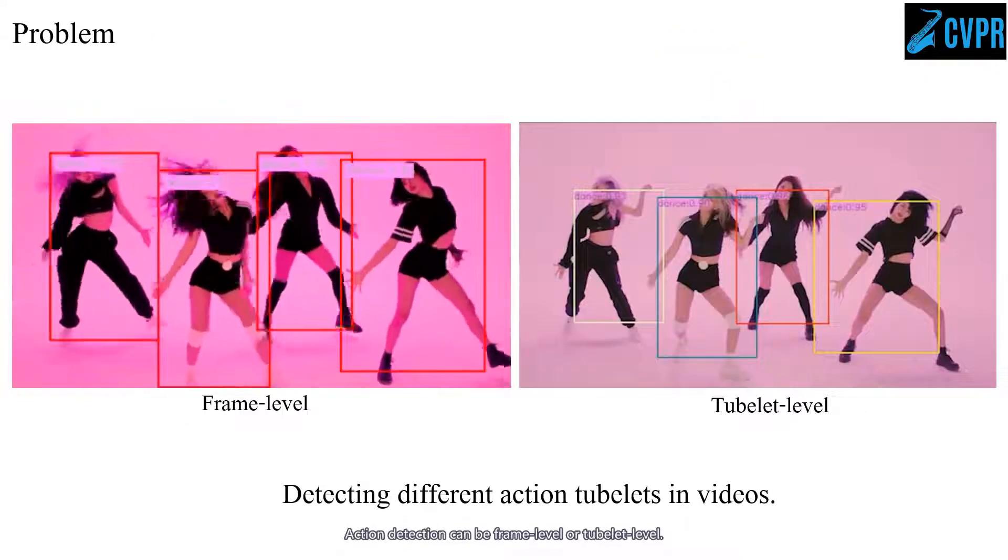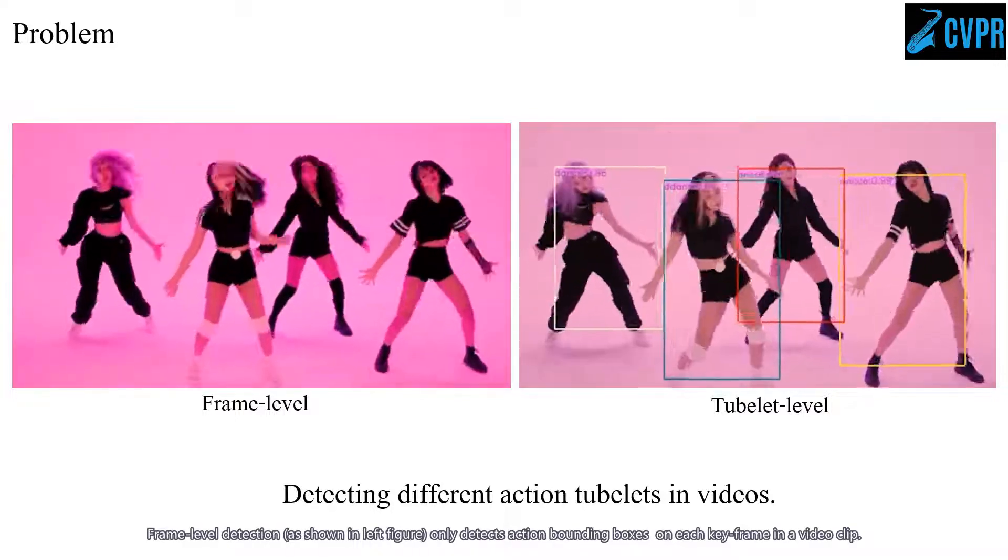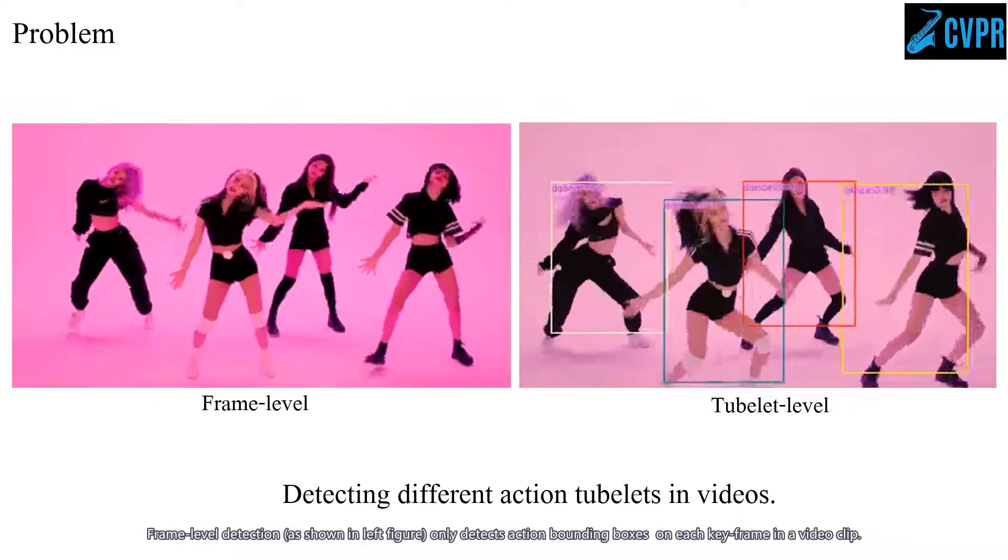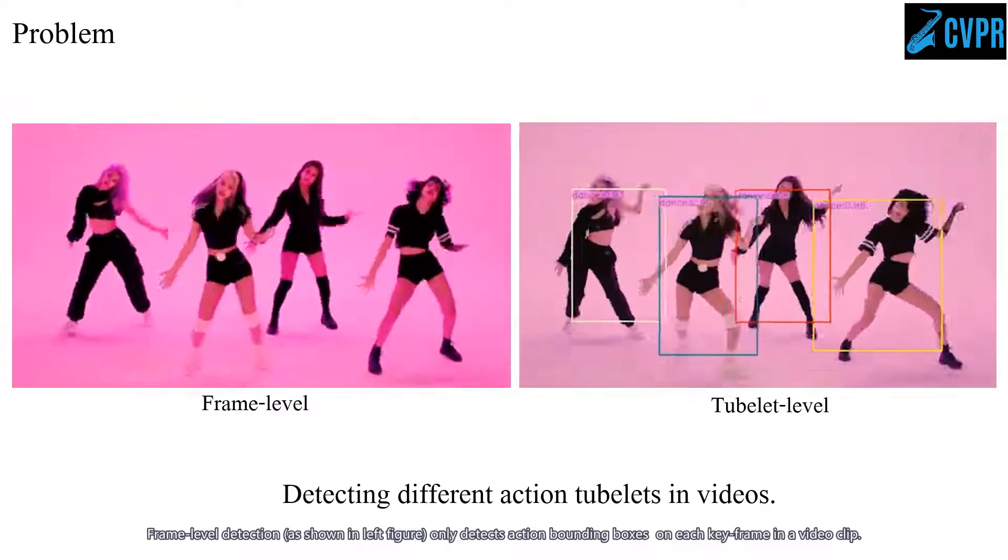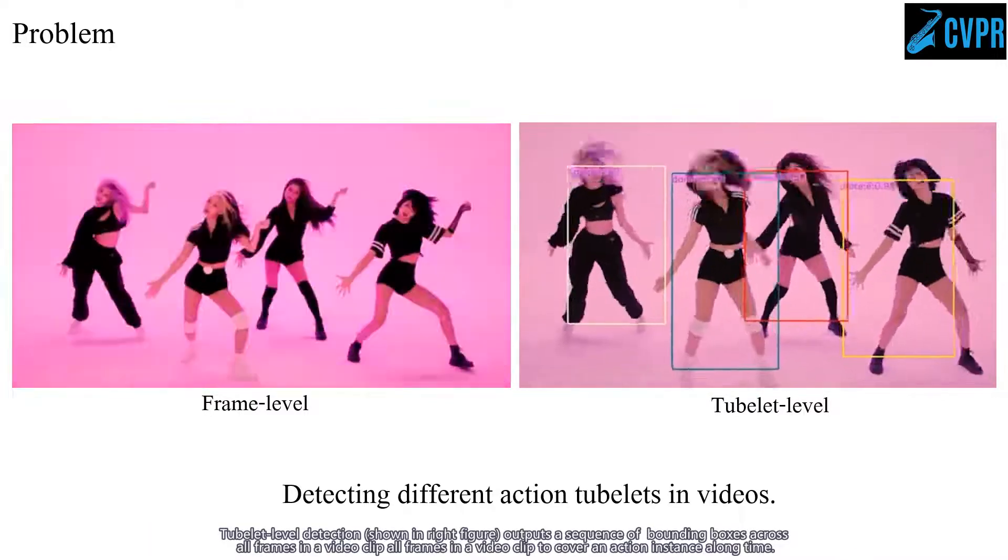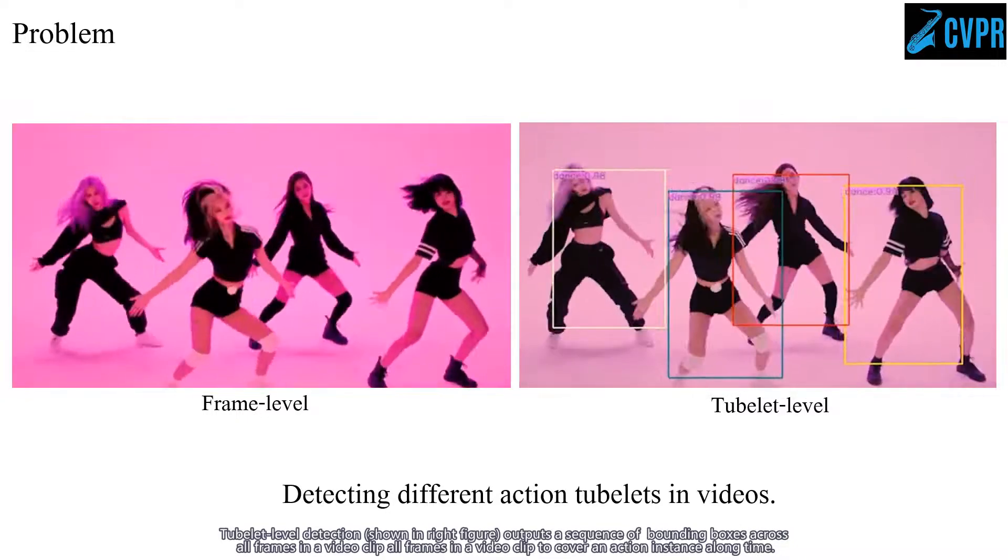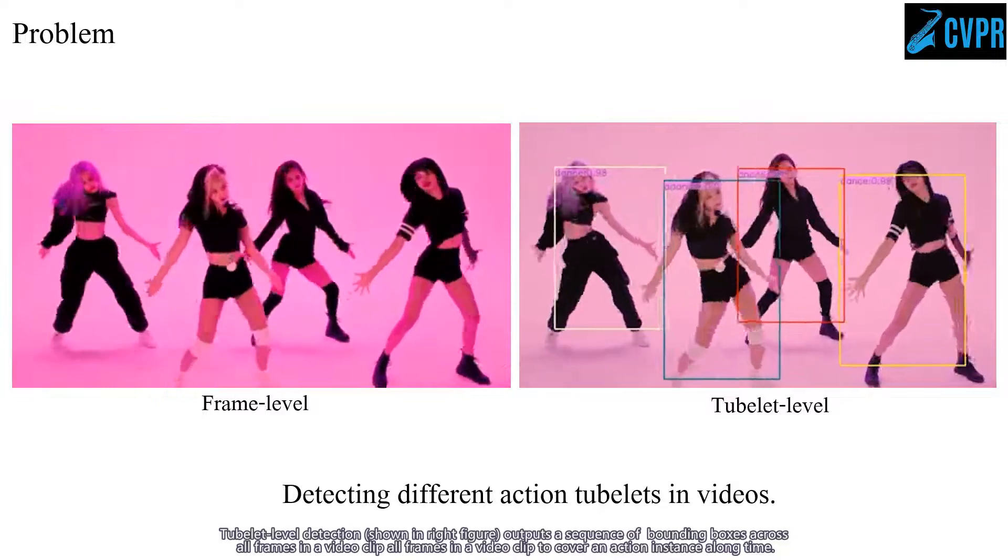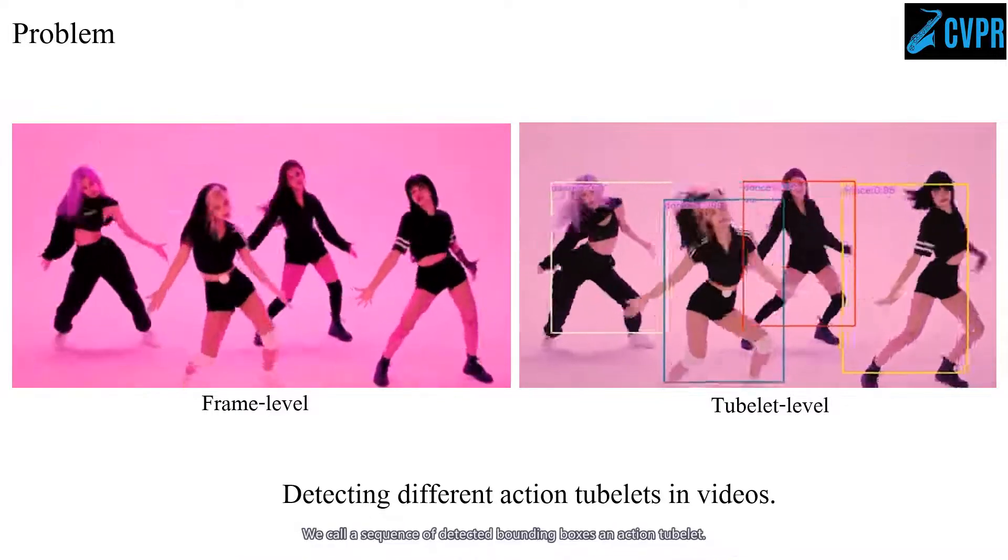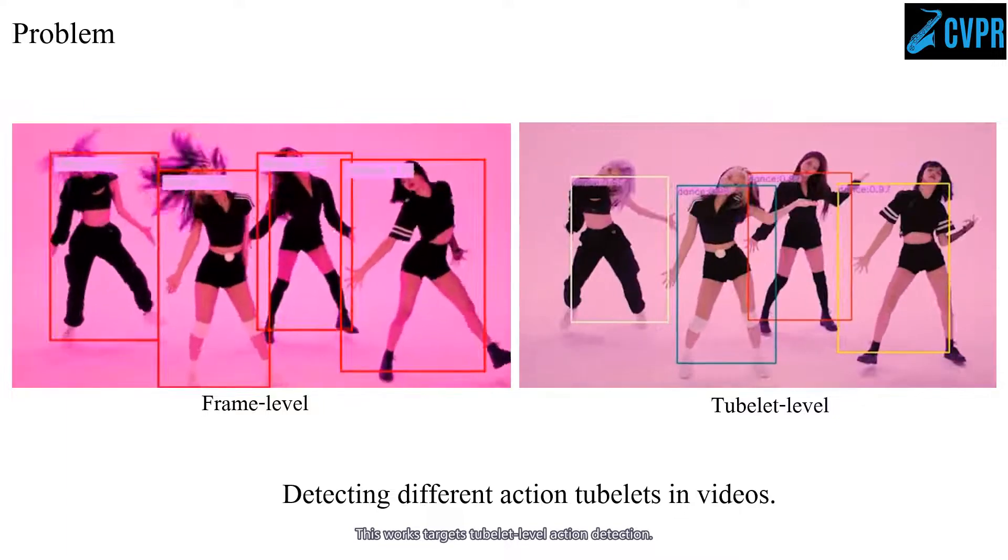Action detection can be frame-level and tubelet-level. Frame-level detection, as shown in the left figure, only detects action bounding boxes on each keyframe in a video clip. Tubelet-level detection, shown in the right figure, outputs a sequence of bounding boxes across all frames to cover an action instance along time. We call a sequence of detected bounding boxes an action tubelet. This work targets tubelet action detection.